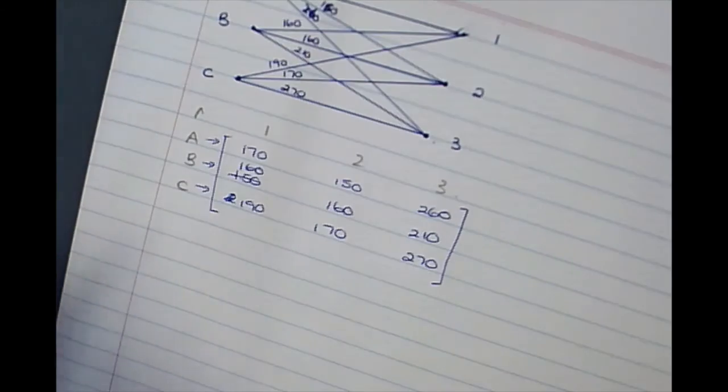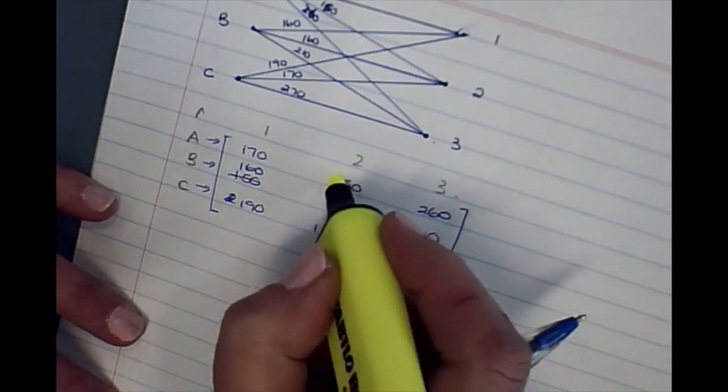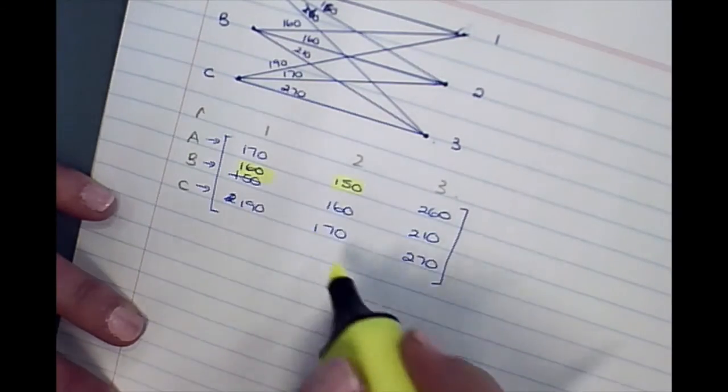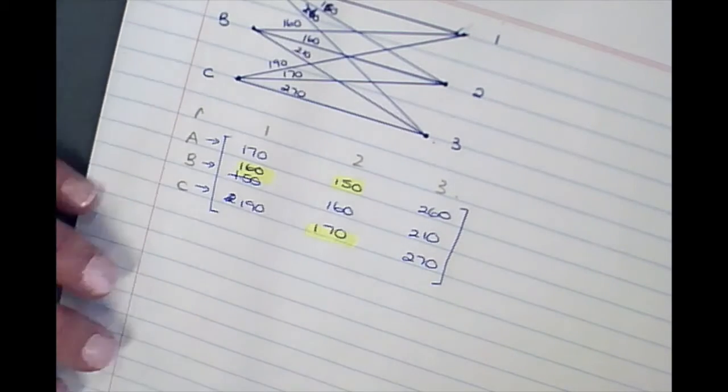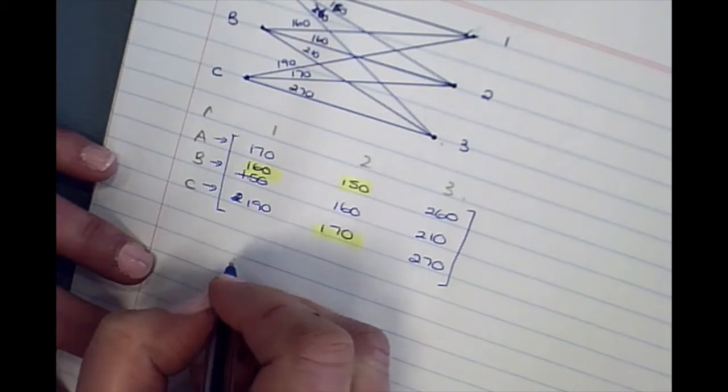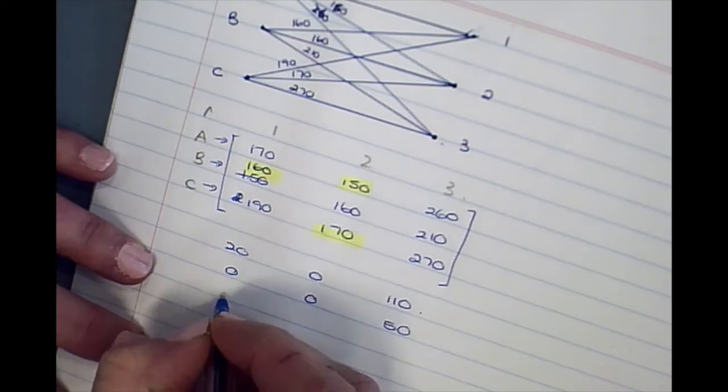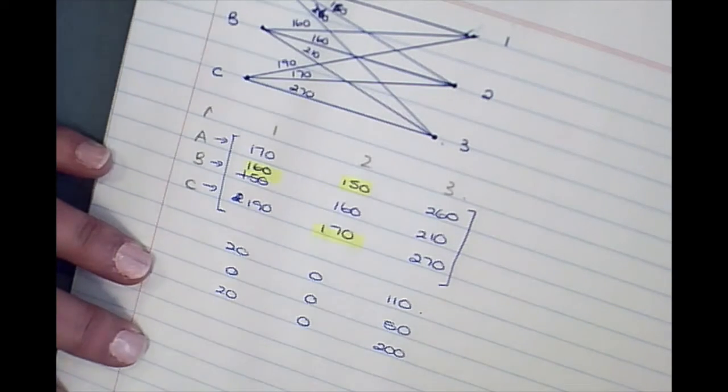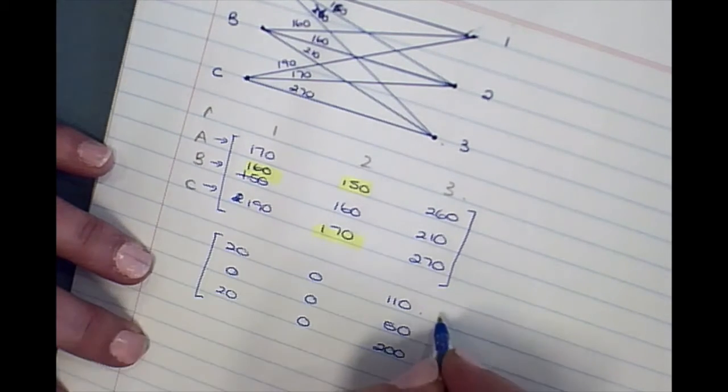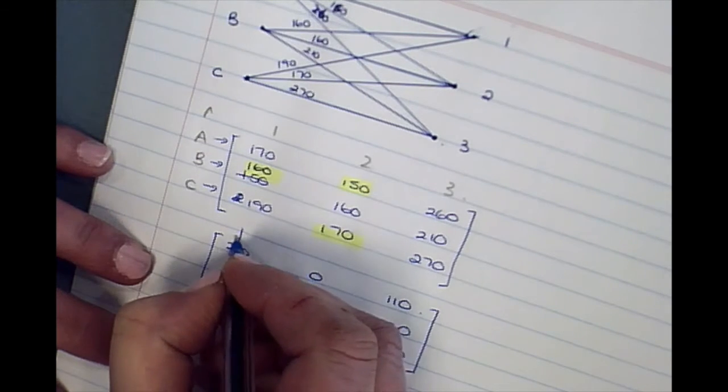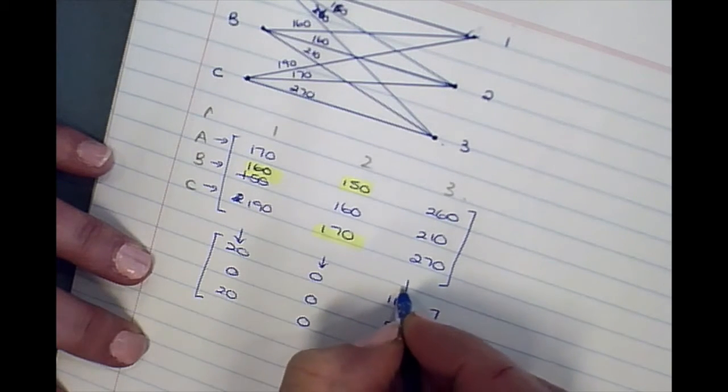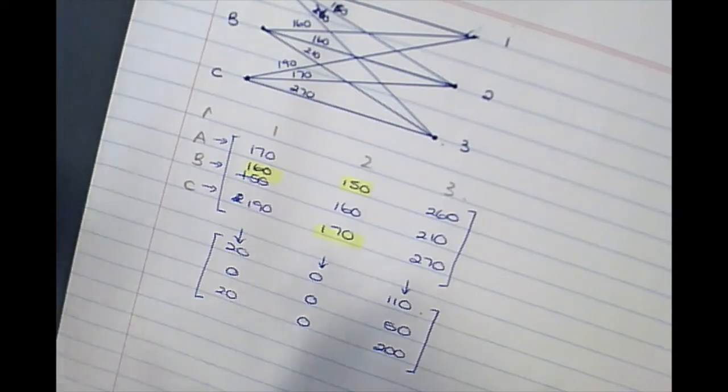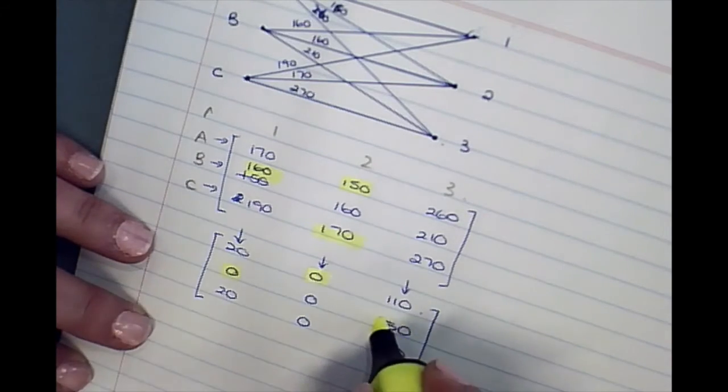Step number two: look in each row, in each row identify the smallest number, subtract that number from all the other numbers in the row.